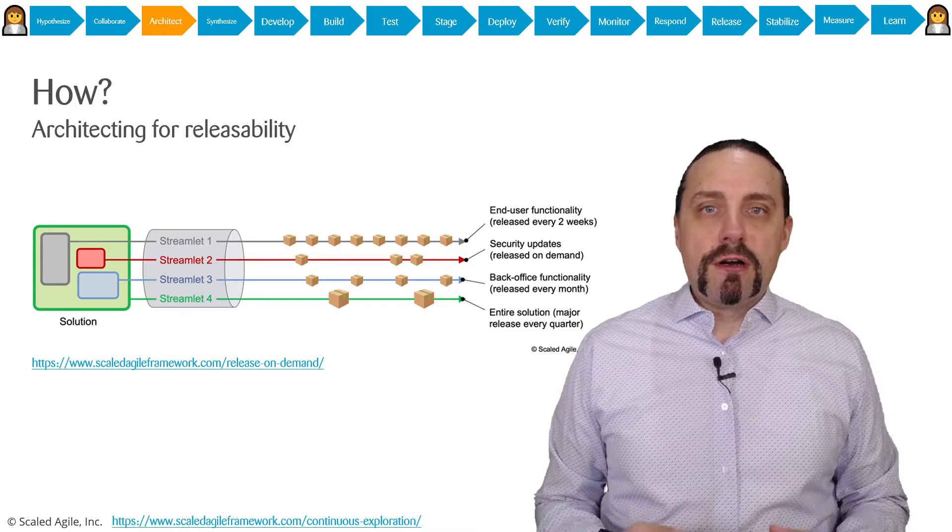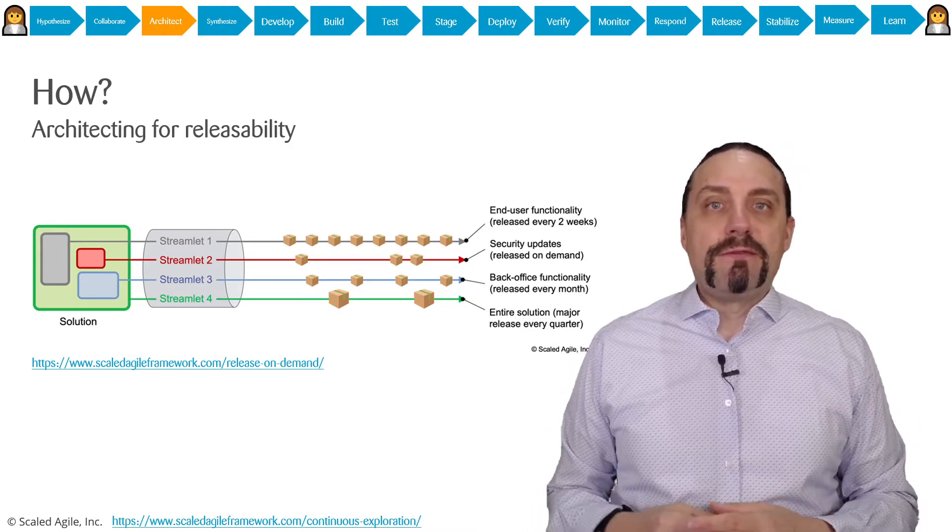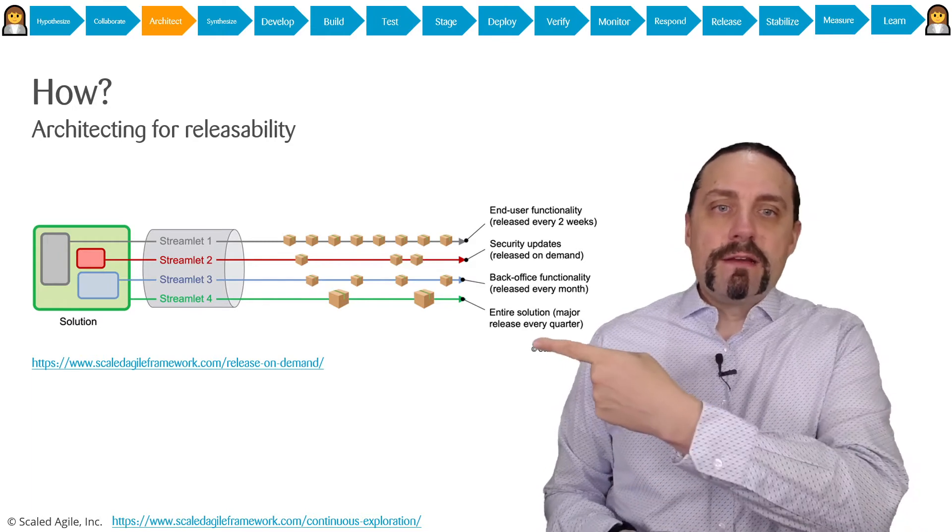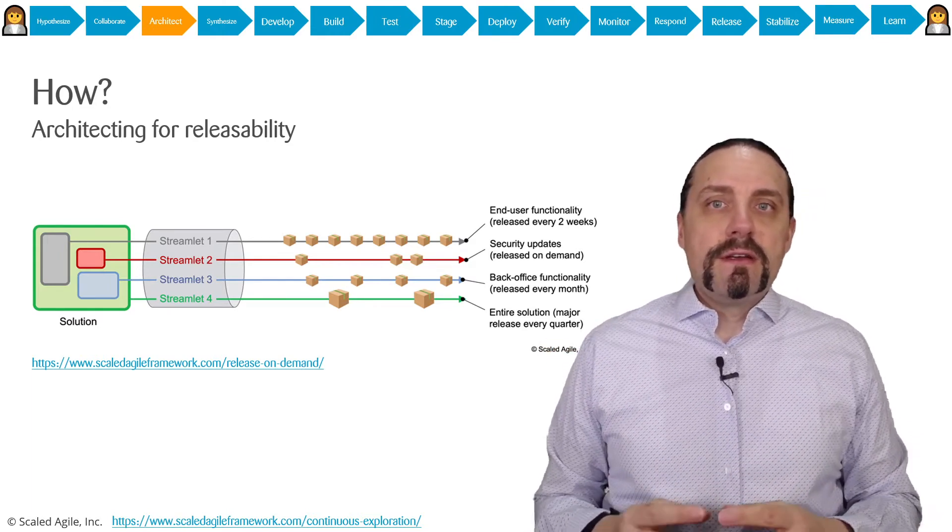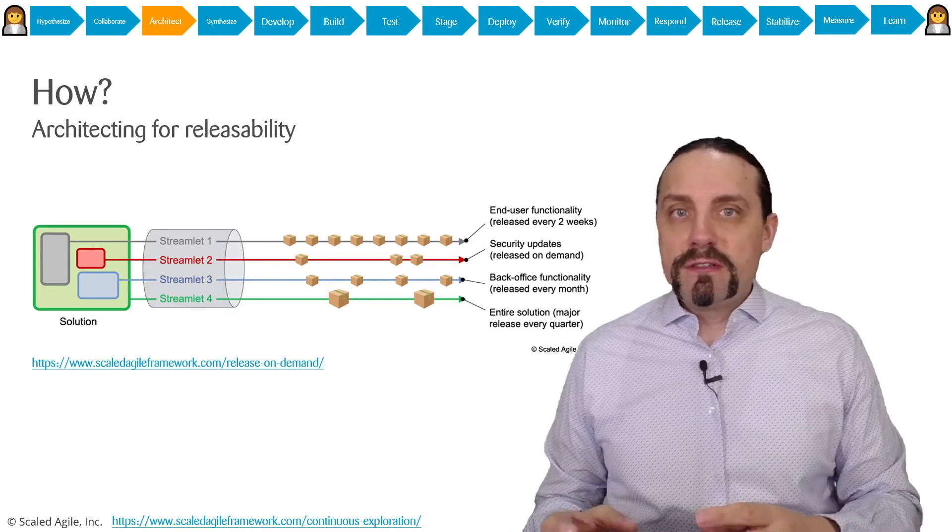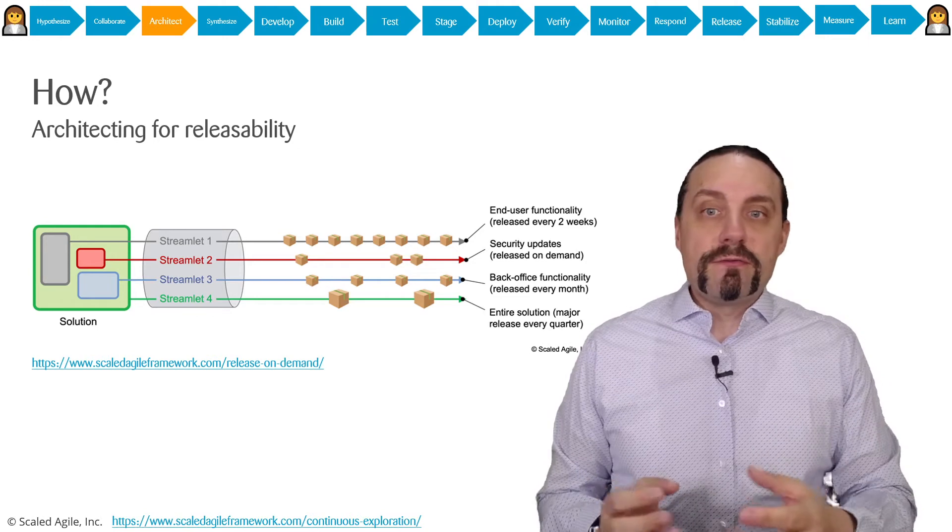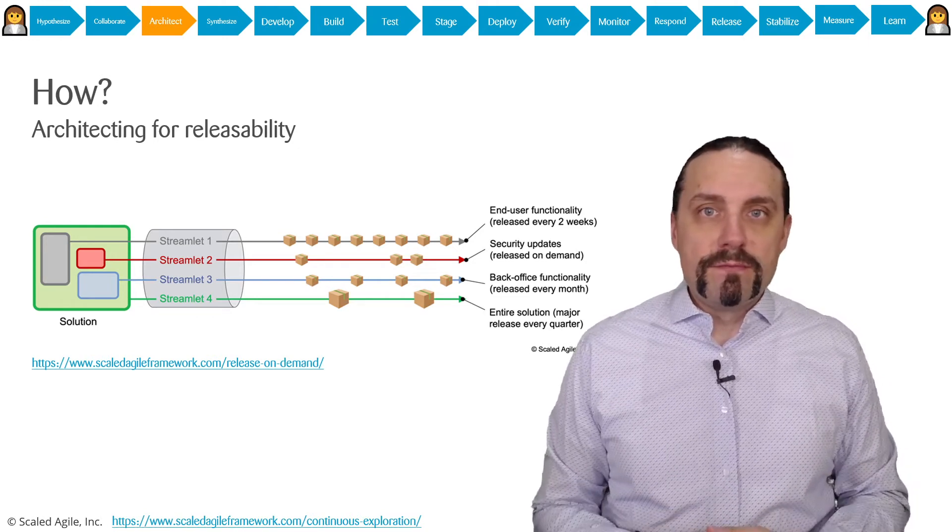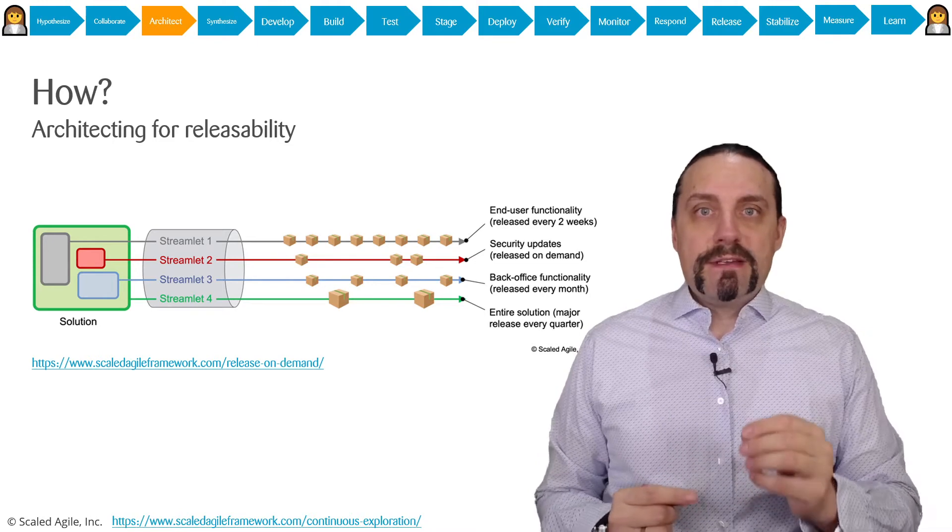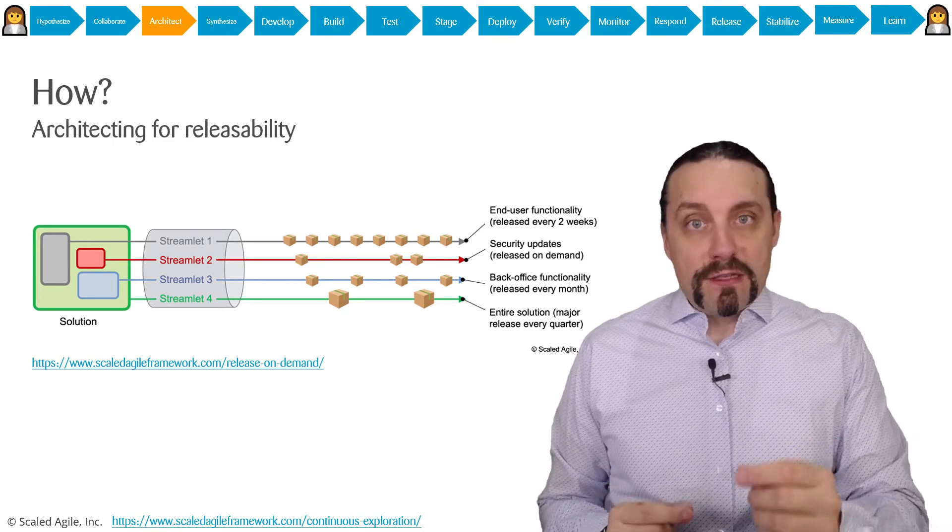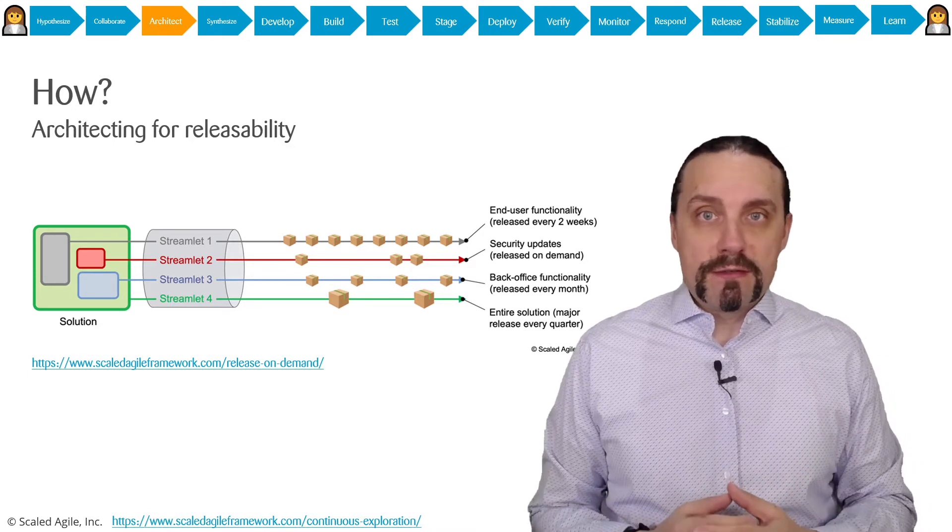You also need to architect for releasability. Usually you have a big system like the green one over there. In this green system you have different components, microservices, or services like the gray, red, and blue ones. What you want to do is have separated deployments and releases of each of these components.